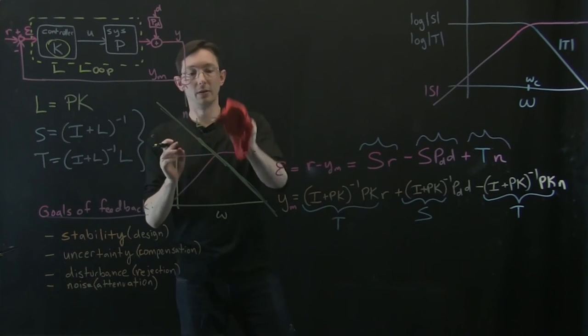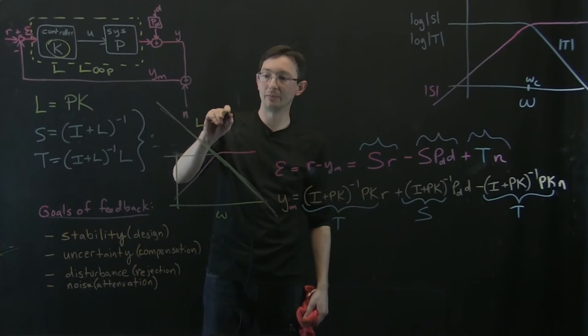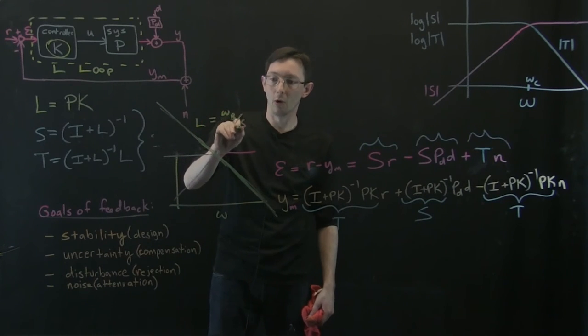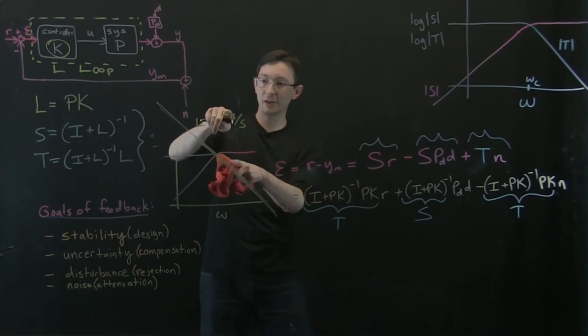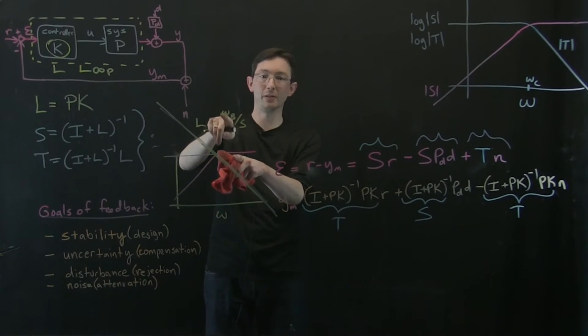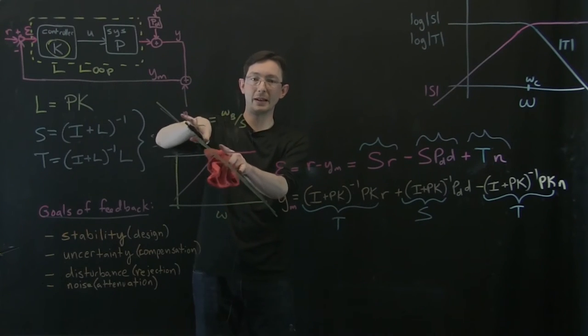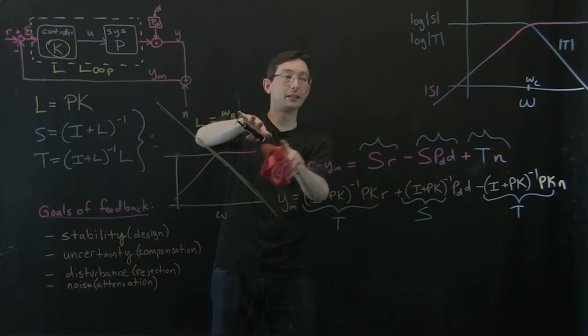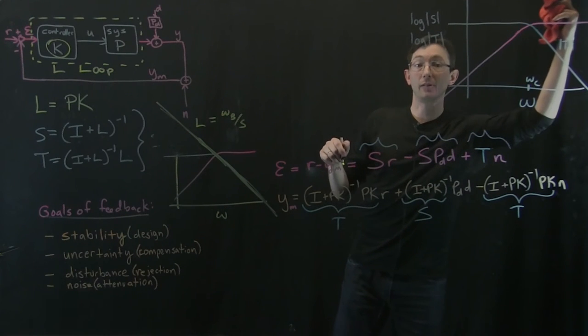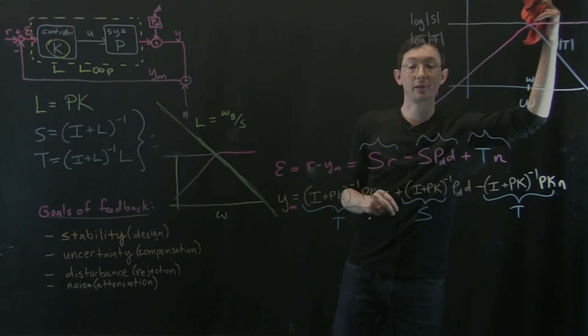So if I want a bigger bandwidth, I just multiply this 1 over S integrator by a big number. So if I multiply this by 10, I can move it to the right and I can get higher frequency reference tracking and disturbance rejection.